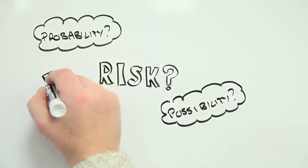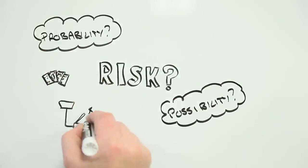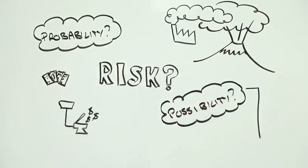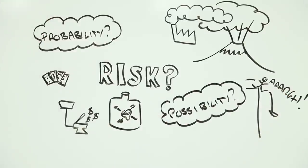For instance, are they thinking about the mere possibility of something unpleasant happening or the actual likelihood of something going horribly wrong? It's an important distinction especially if you want to reduce or avoid risk.